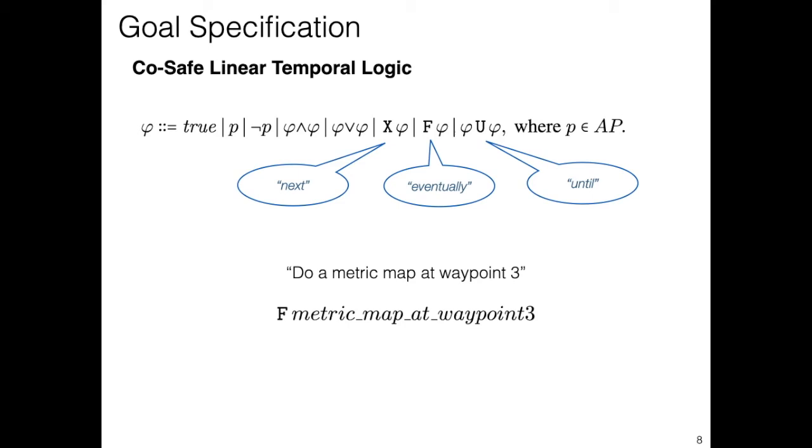We now move on to the specification language. We propose the use of Cosafe linear temporal logic to encode our tasks. Cosafe LTL is an extension of propositional logic, which allows us to reason about finite behaviors of the robot, and can be used to specify properties such as reachability or safety. It is comprised of the standard Boolean connectives, plus a set of temporal operators.